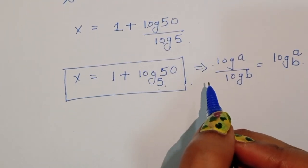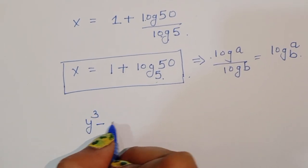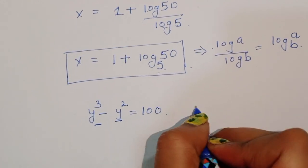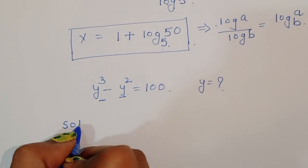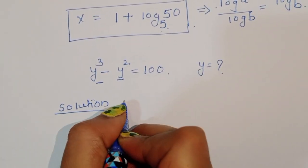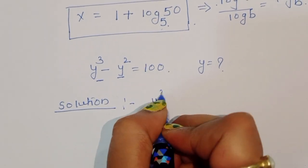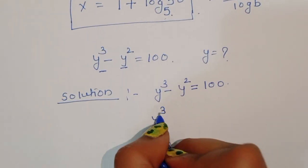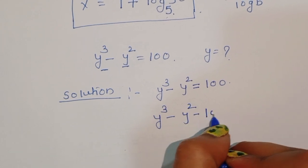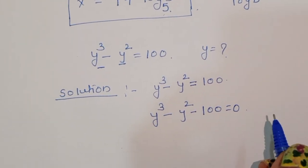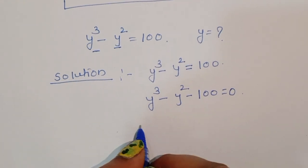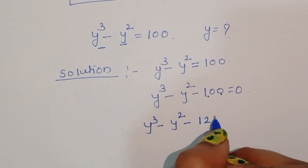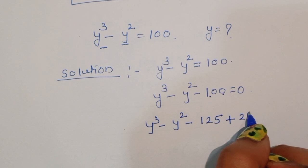Now let's see another question: given y cubed minus y squared is equal to 100, we have to find out the value of y. We can rewrite this as y cubed minus y squared minus 100 is equal to 0. Now we can write minus 100 as minus 125 plus 25.